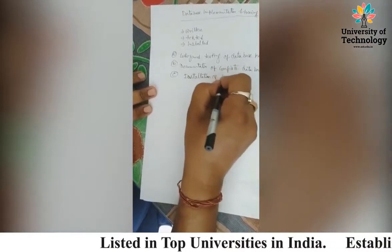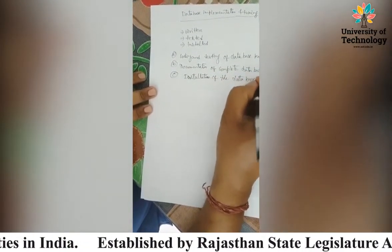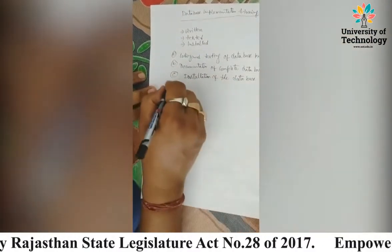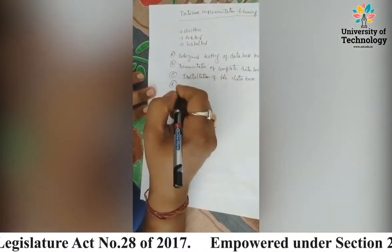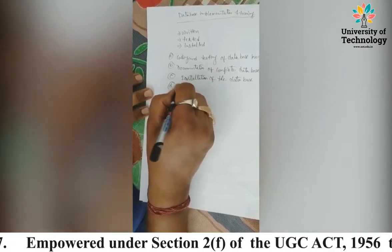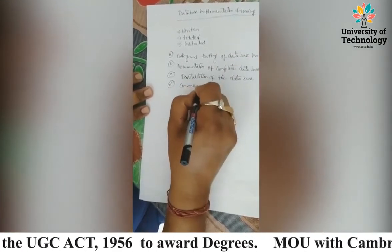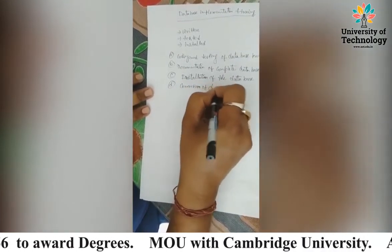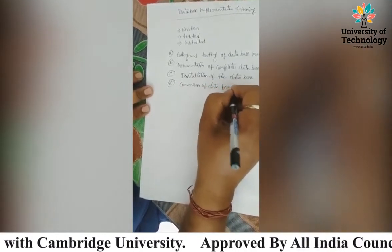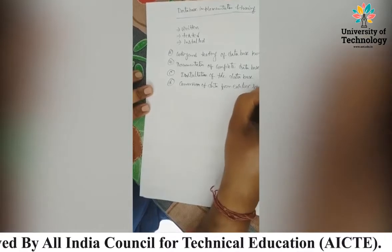The third stage is installation of the database. The database you have built will be installed into the system. And the fourth step is conversion of data — conversion of data from the earlier system.